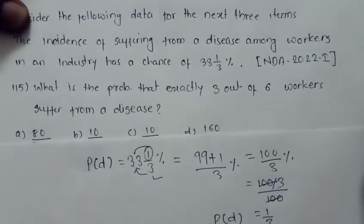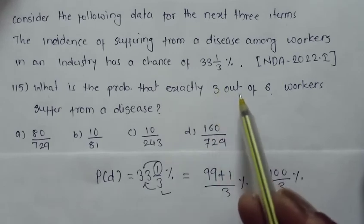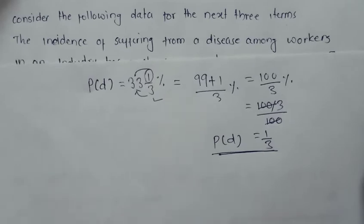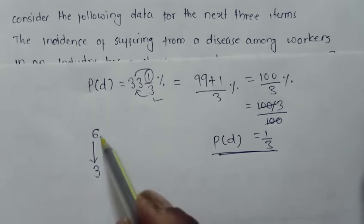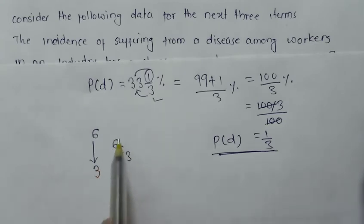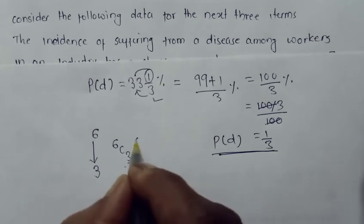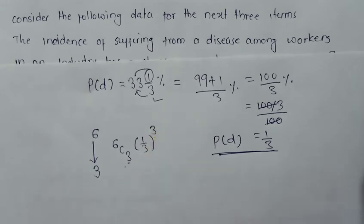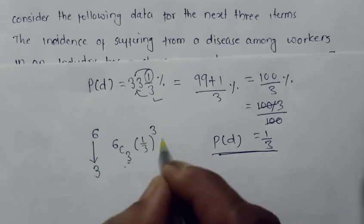The question asks: out of 6 workers, what is the probability that exactly 3 are suffering from a disease? We have a total of 6 workers, and we want to select 3 who are suffering from a disease. The number of ways to select 3 out of 6 is 6C3. The probability of suffering from a disease is applied 3 times, giving (1/3)³.